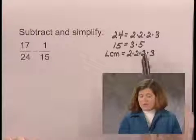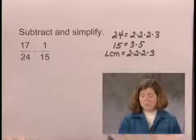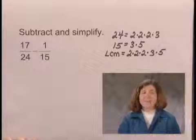The other prime number that we see is 5. There is one factor of 5 in 15 and none in 24, so we need one factor of 5. And that is the least common multiple.